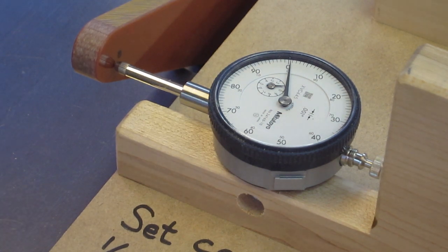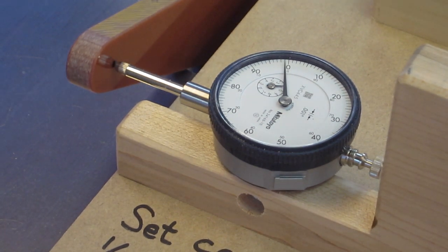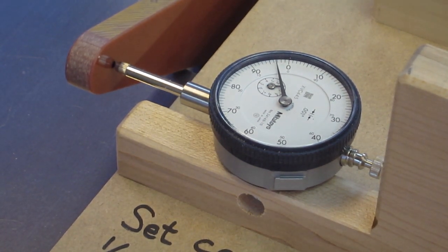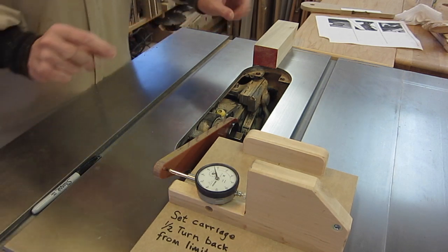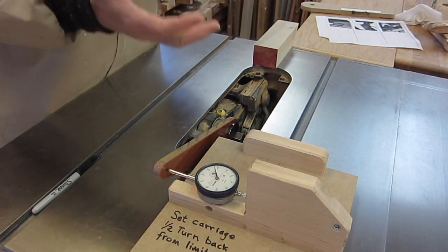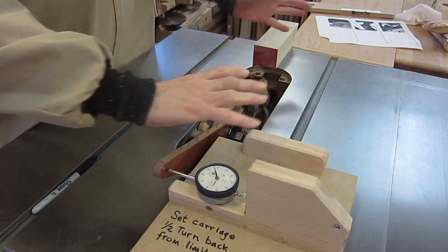Doing the same test, raising the carriage to its limit at the other end, I get the same effect, but only 3,000th of an inch distortion. So it's not even a consistent distortion of the carriage as it reaches its maximum. It's somehow twisting.